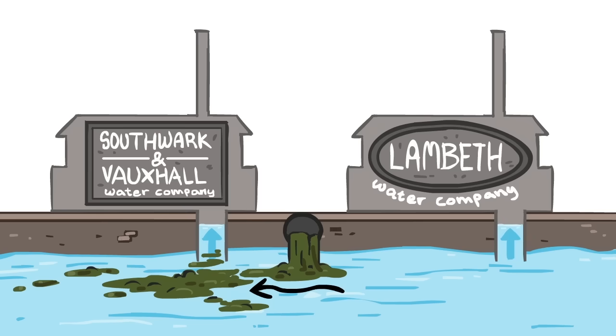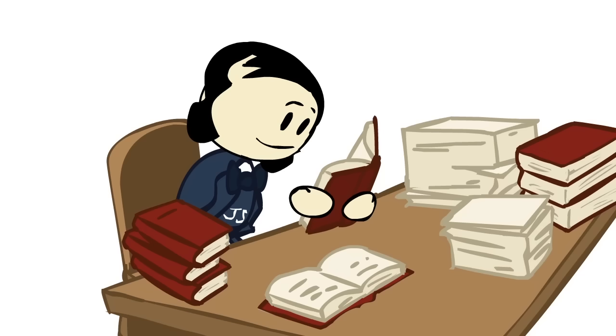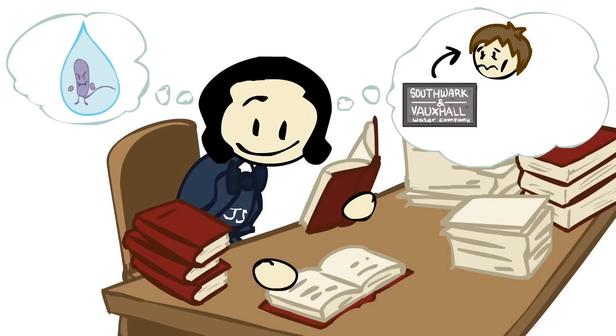He had the perfect case study, the perfect A-B test. If he was right about the mode of communication of cholera, all he'd have to do is compare the infection rate from those served by S&V to those served by Lambeth. He wrote,